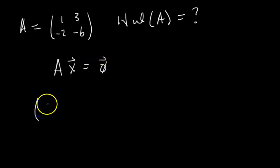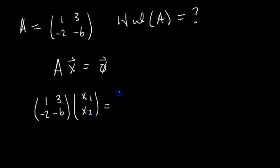So we could write this matrix equation, 1, 3, negative 2, negative 6, times your x vector, which is just something like x1, x2, equals the 0 vector, so it's a vector of all 0s. So we want to find all the x vectors, x1, x2, that satisfy this equation, and the collection of all those x vectors, we call it the null space of A.